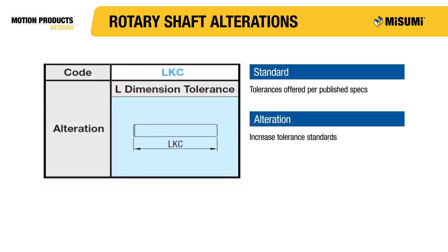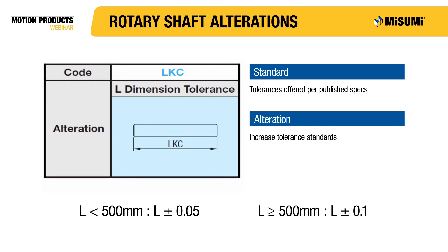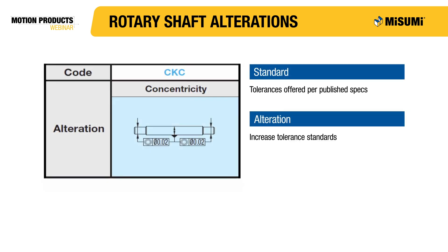From the accuracy standards section, Misumi offers length tolerances ranging from ±0.1 to ±0.8 millimeters depending on the length selected. An alteration improves the length tolerance to ±0.05 millimeters for shafts under 500 millimeters and ±0.1 millimeters for shafts 500 millimeters and greater. While the standard concentricity tolerance for rotary shafts is 0.06 millimeters, an alteration can improve this to 0.02 millimeters, which is ideal for high speed applications.